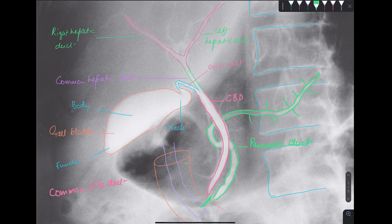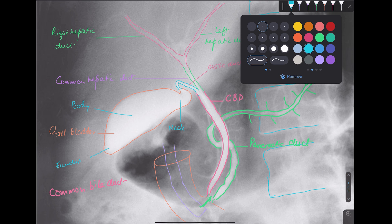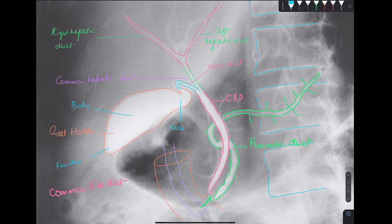And now the place where this pancreatic duct and this bile duct, they open into my second part of the duodenum. And the place where this ampulla of Vater is opening is guarded by a sphincter and that is sphincter of Oddi. And this is the landmark where my foregut becomes the midgut.